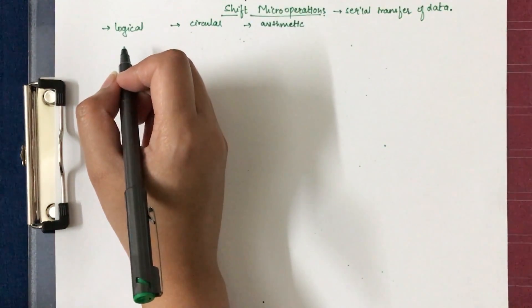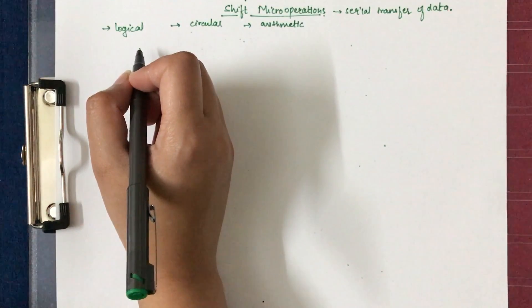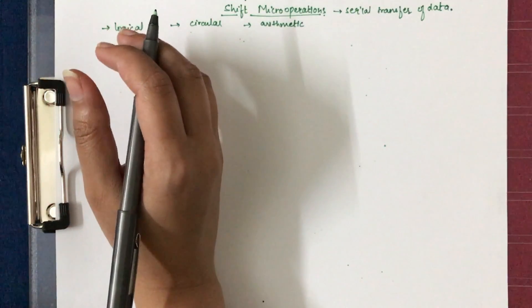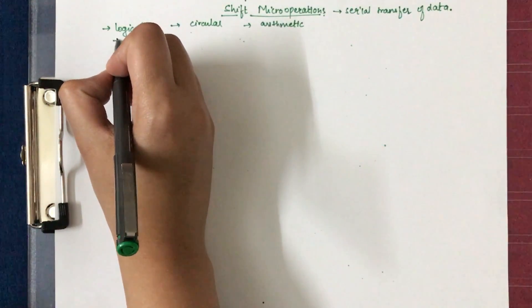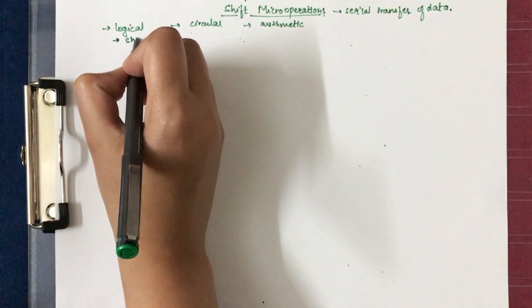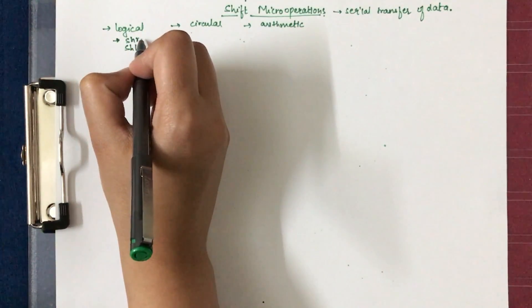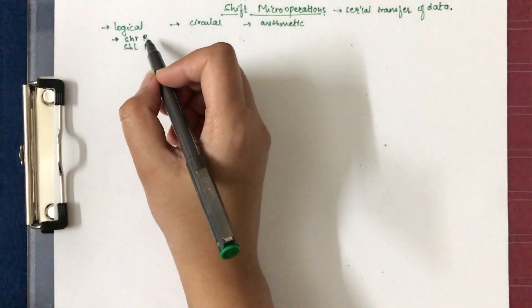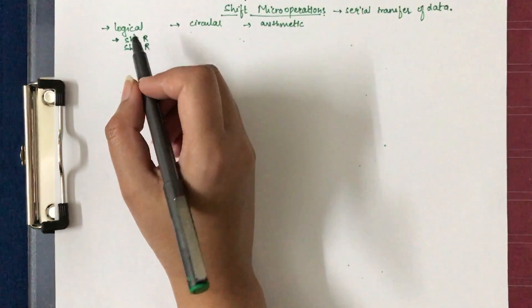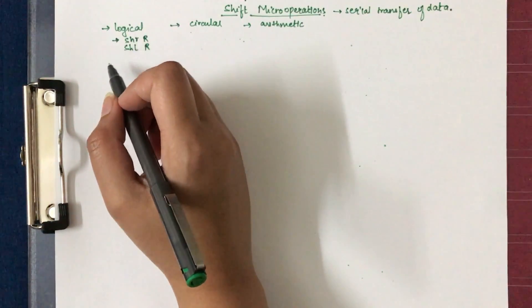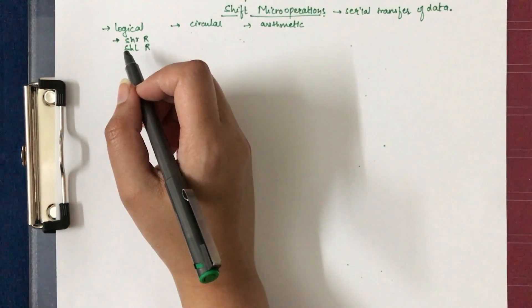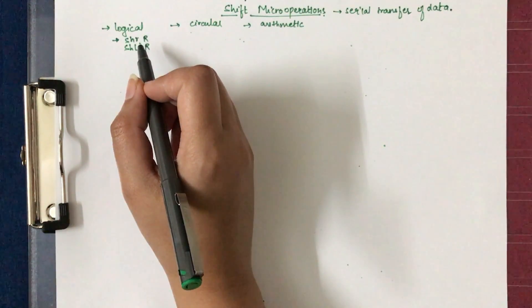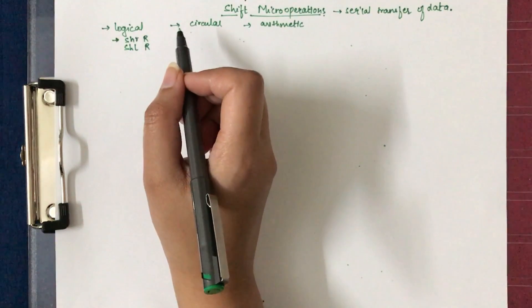Logical shift micro-operations are the easiest to perform, as the bits are simply shifted to the left or to the right. They are represented as SHR for shift right and SHL for shift left, followed by the register to be shifted. In a logical shift left, a 0 is transferred into the rightmost position and the leftmost bit is lost.